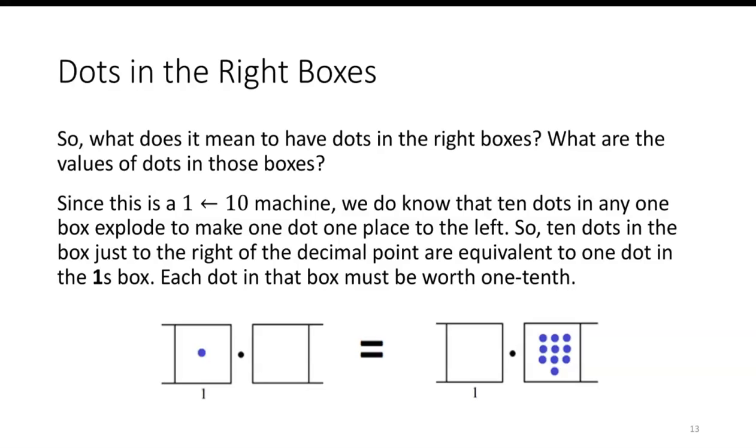So what does it mean to have dots in the right boxes? What are the values of dots in those boxes? Since this is a 1←10 machine, we do know that ten dots in any one box explode to make one dot one place to the left. So ten dots in the box just to the right of the decimal point are equivalent to one dot in the ones box. Each dot in that box must be worth one-tenth.